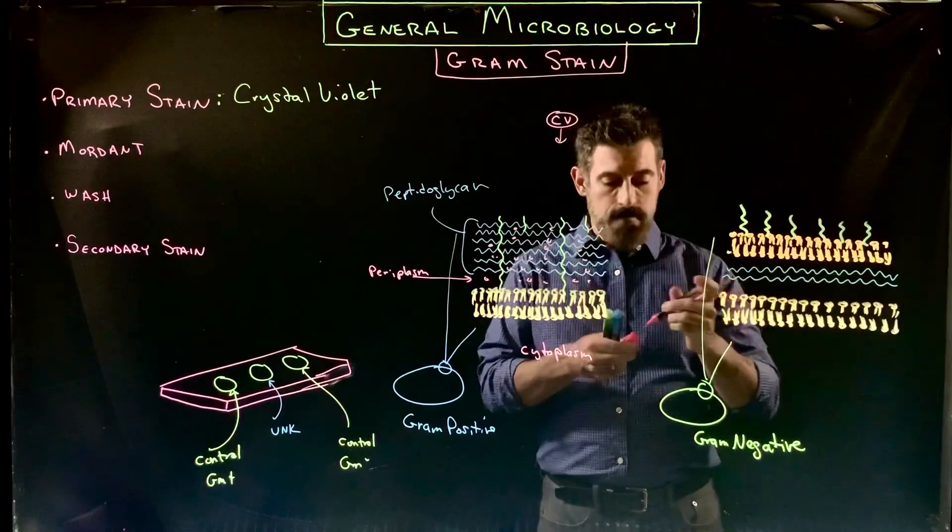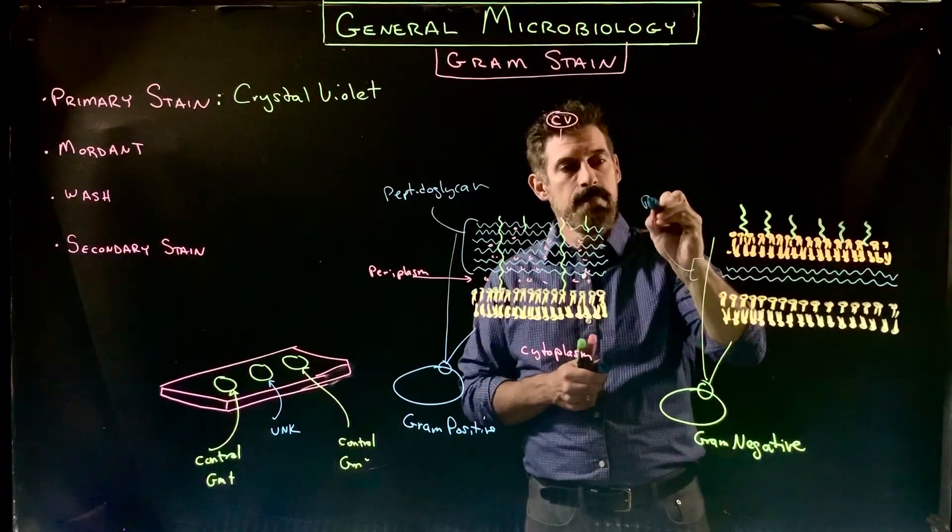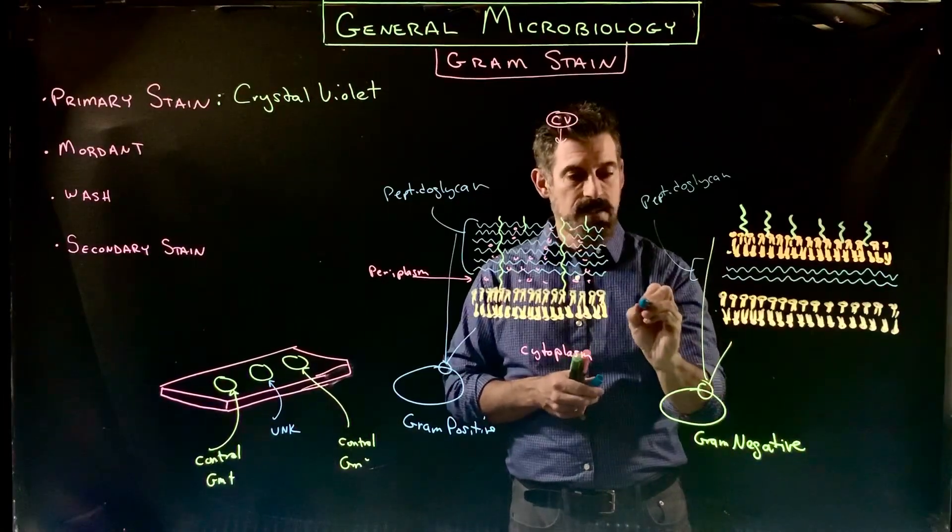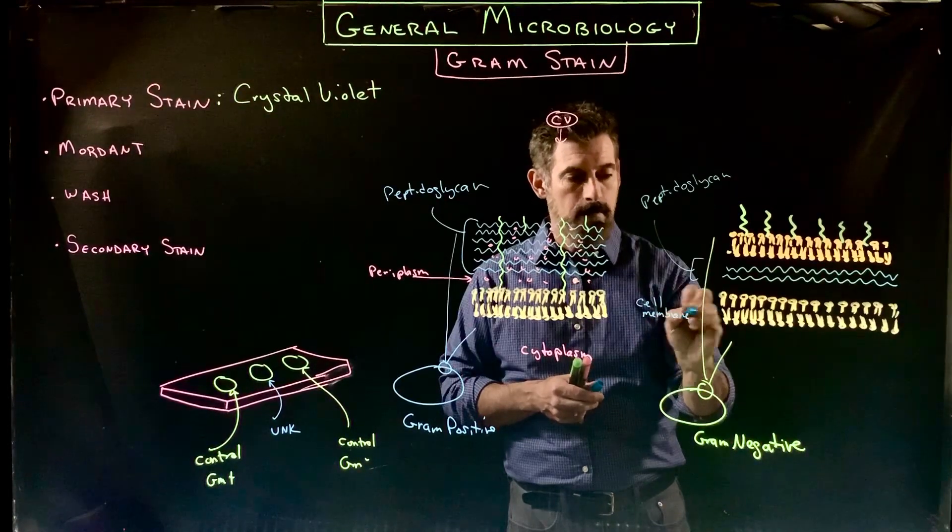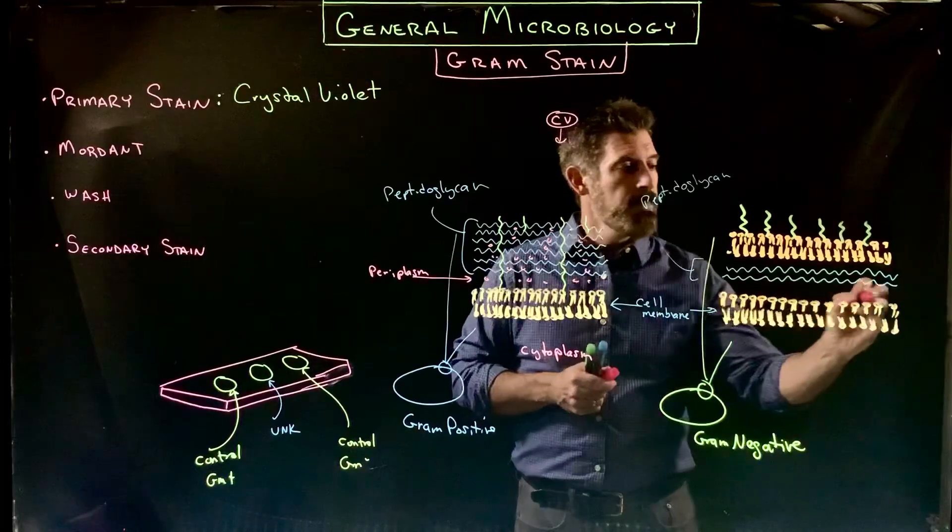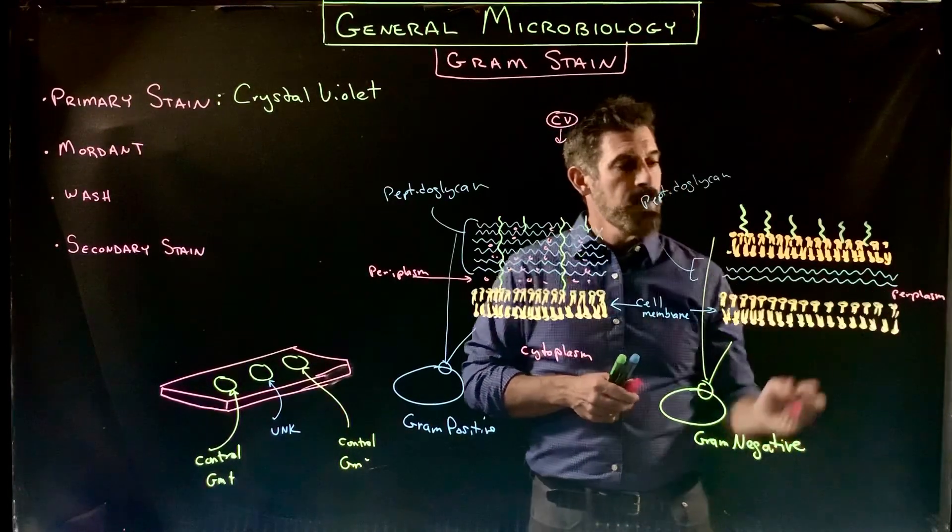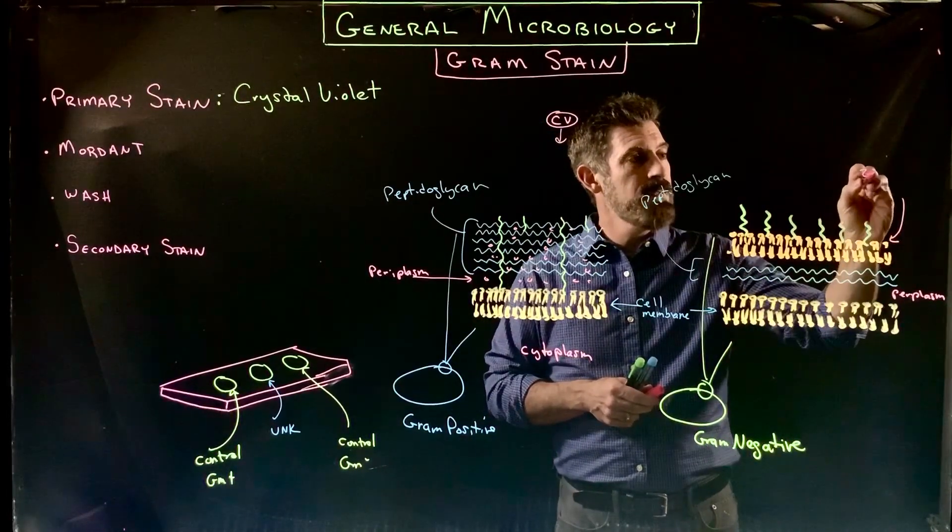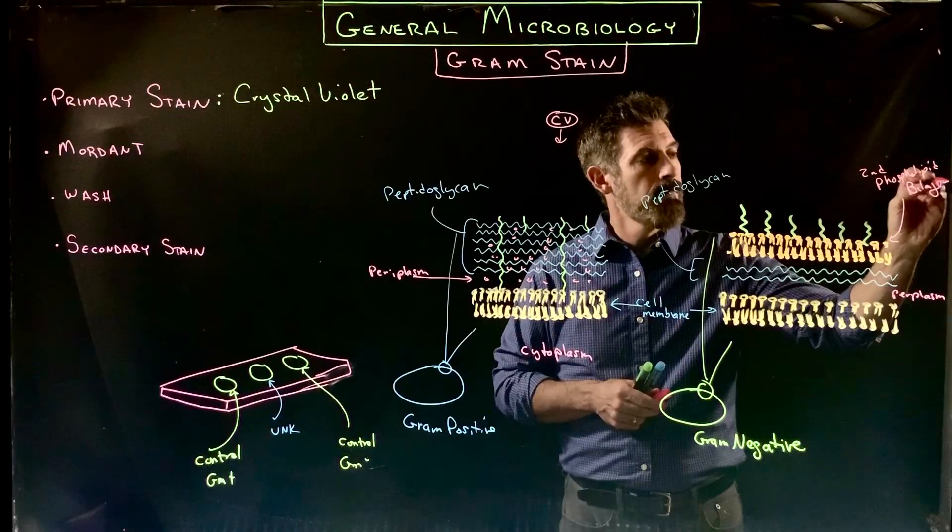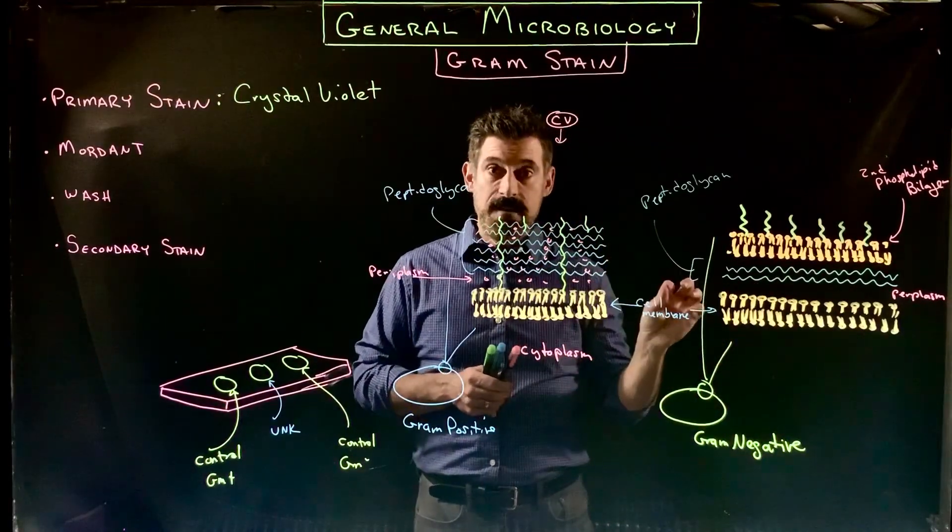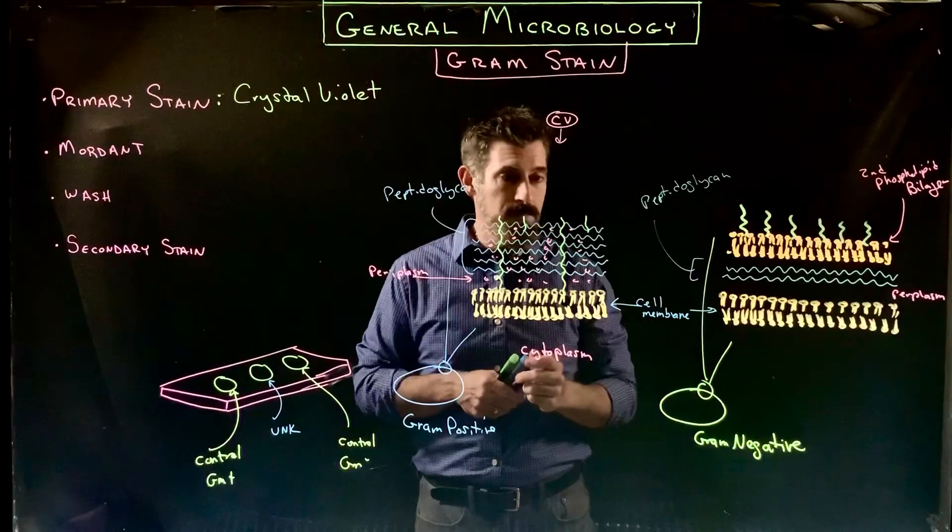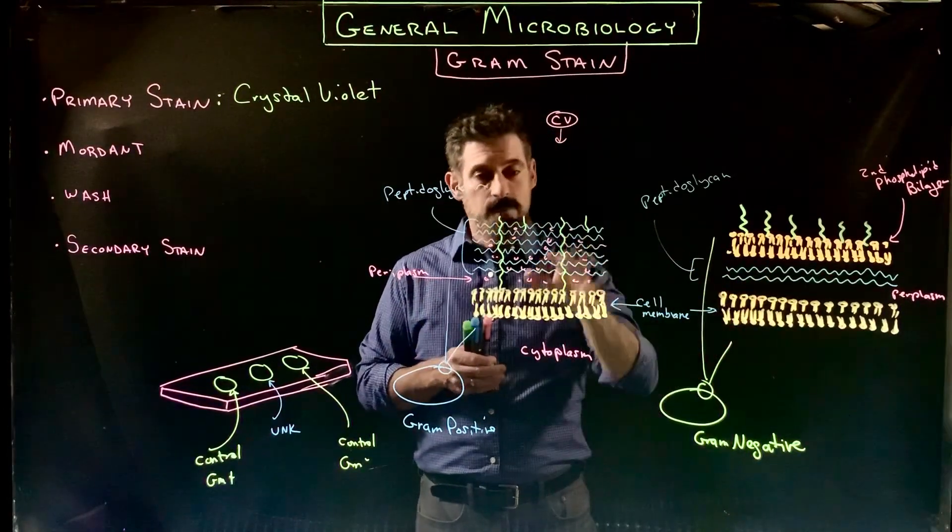Over here, this is our gram-negative organism. A little bit different. You see here we have peptidoglycan, and we would have our cell membrane, a phospholipid bilayer with proteins and other molecules associated with it, and then we have a periplasm. But then what we have for the gram-negative organism is a second phospholipid bilayer. The reason we have that is because the peptidoglycan layer is very thin.